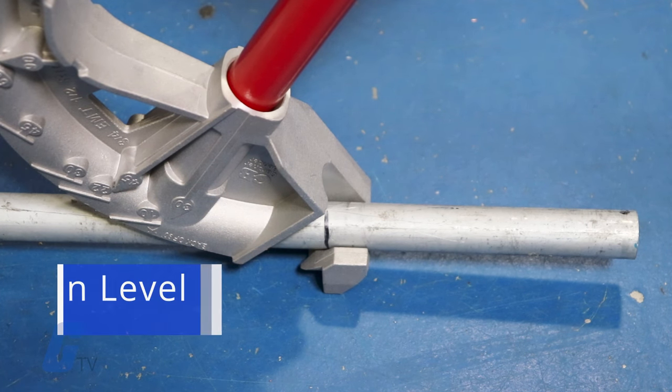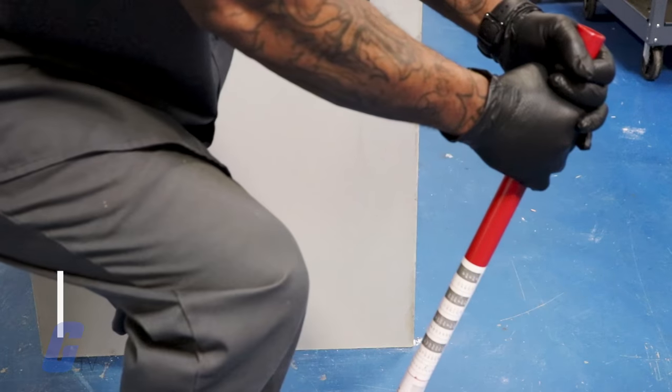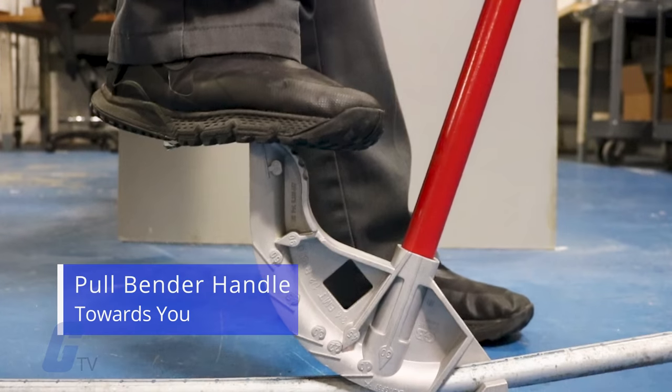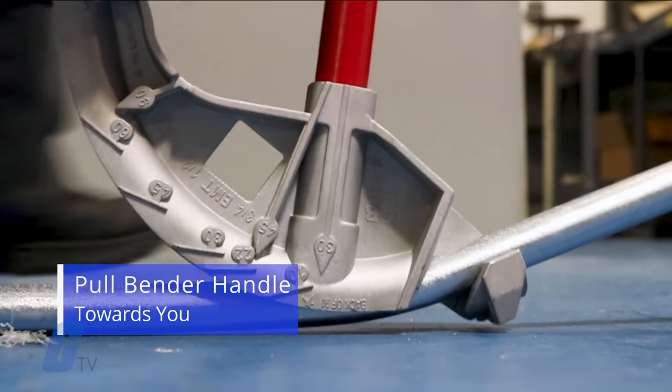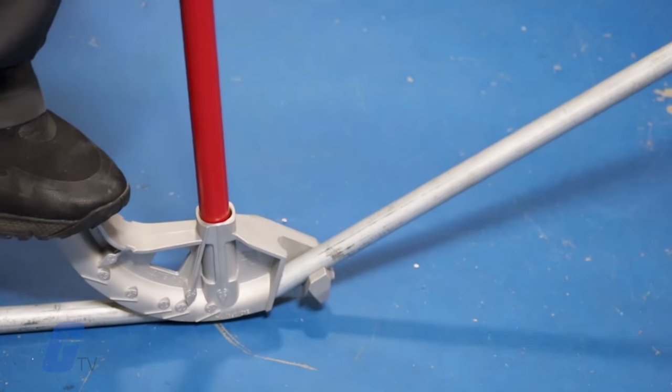Set the conduit on level, firm ground, and place your foot firmly on top of the foot pedal of the bender. Now, pull the bender handle towards you to create the bend with a firm and steady motion to avoid any kinks or crimps in the conduit.